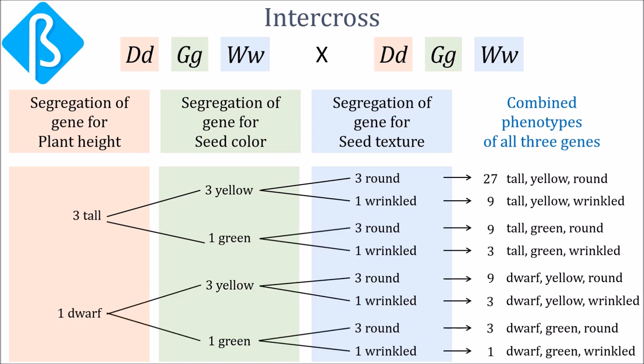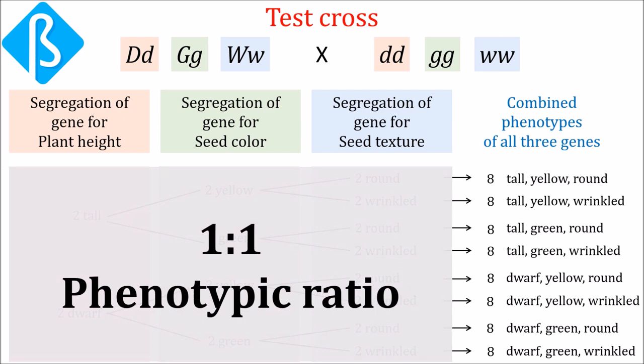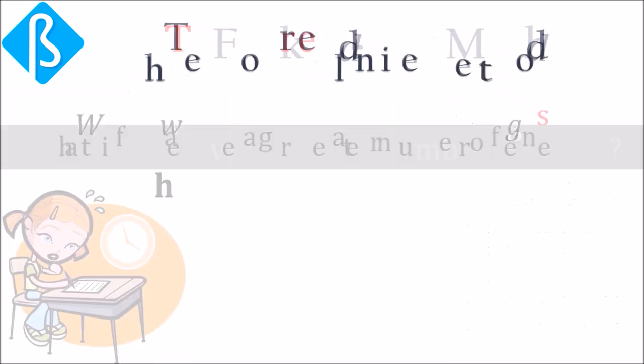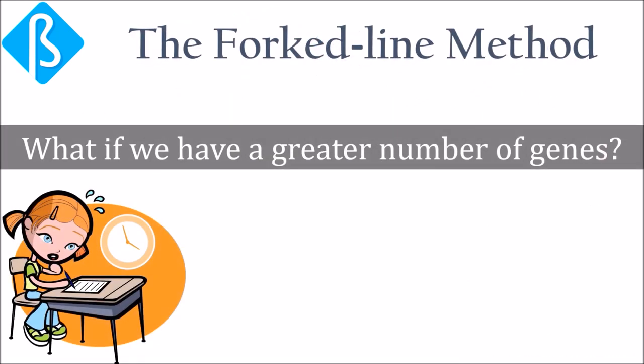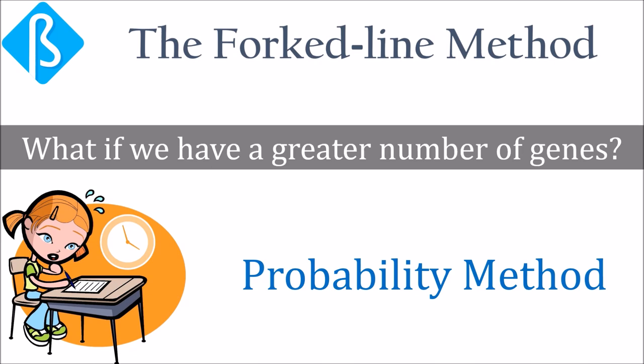Fork-line is also applicable for test cross where the same multiplication rule is followed. Fork-line is definitely easier than Punnett, but don't you think if we have greater number of genes it would be time consuming? Well, upgradation is always the thing that is needed, and in fields like biology where research itself is time consuming, quicker result analysis method is always appreciable. On that basis, probability method, which is the third method for application of Mendelian principles, was introduced.